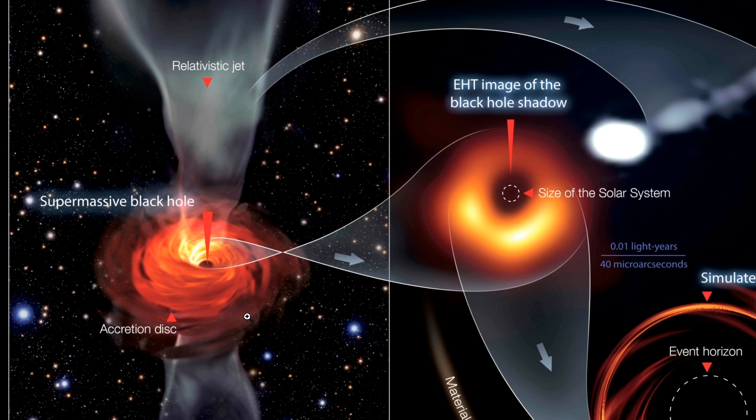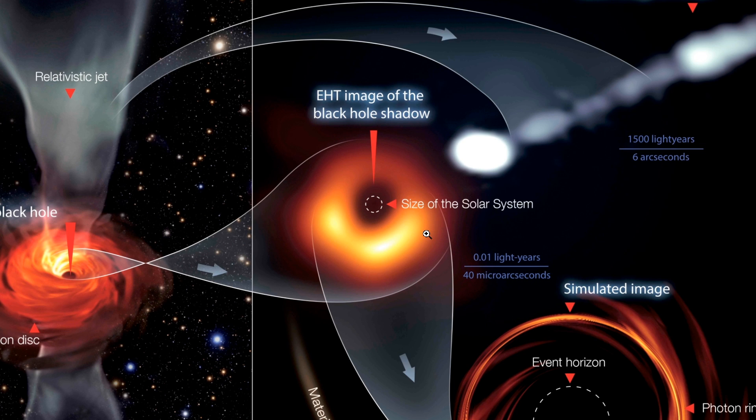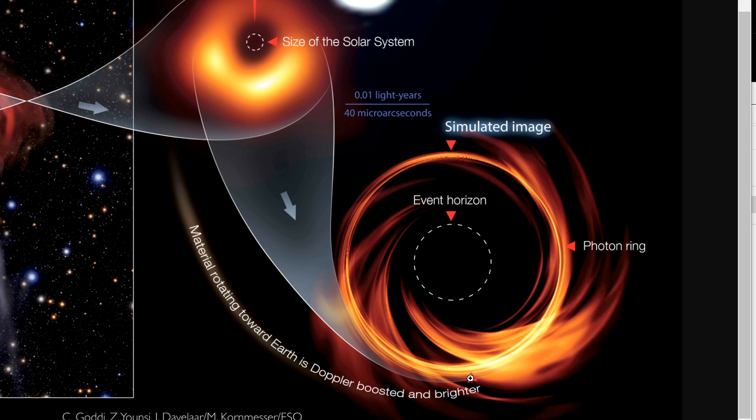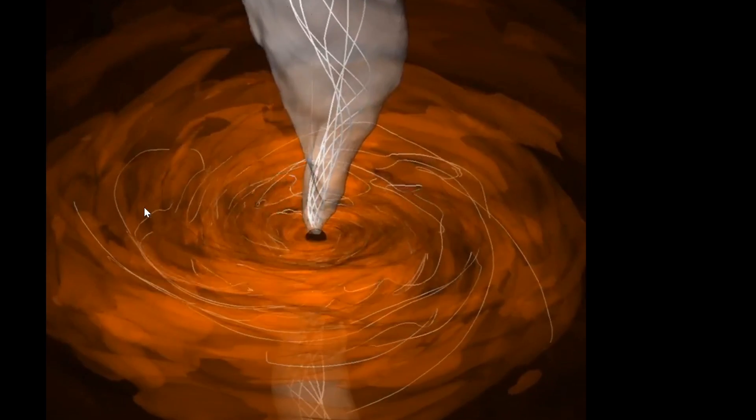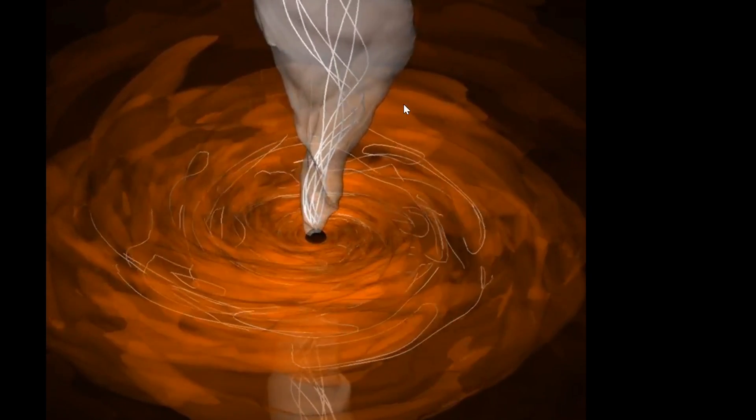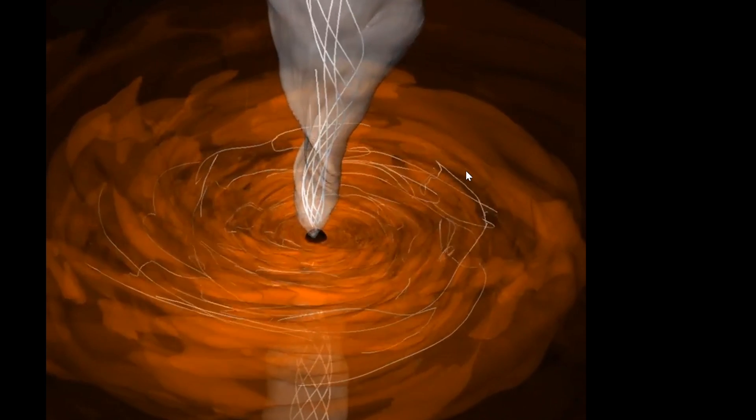And essentially the black hole with the accretion disk and the relativistic jet right here through the observations in 2017 transformed into this picture right here and this is only a few weeks of observations. Here's what a simulated image of all of this looks like. And this brighter part right here, that's essentially the Doppler shift because of the motion of the material in the accretion disk as it moves either toward planet earth or away from planet earth.